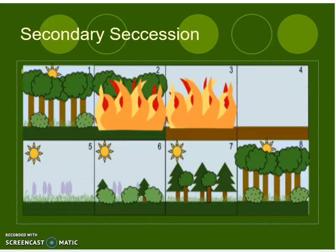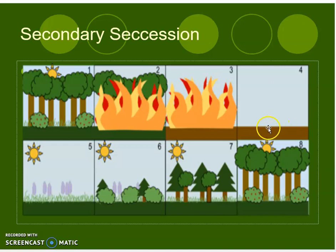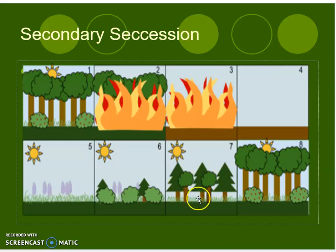Here is a depiction of secondary succession. Picture one shows you the flourishing forest. Pictures two and three show the fire has engulfed the forest and destroyed everything. In picture four, we're left with the soil. Picture five, weeds and grasses have started to grow. Picture six, we have some shrubs and small trees. Picture seven, the trees and grass are growing. Picture eight, we finally have our climax community.